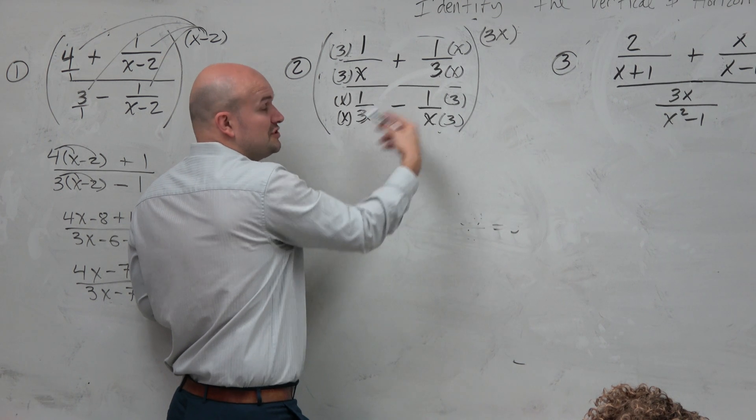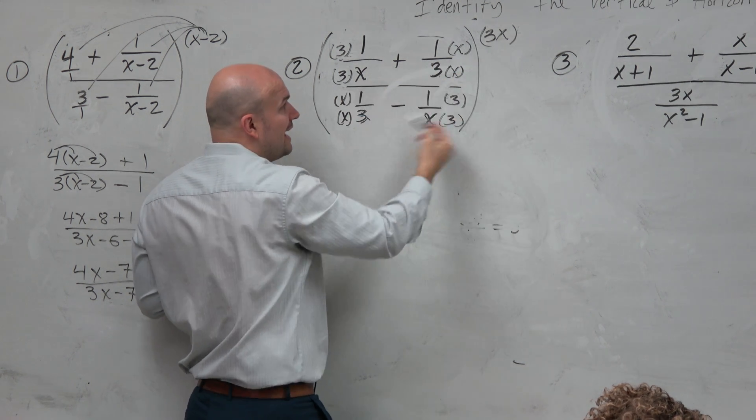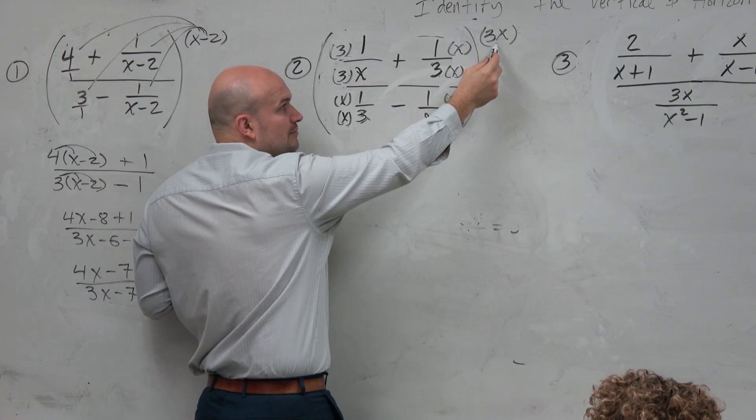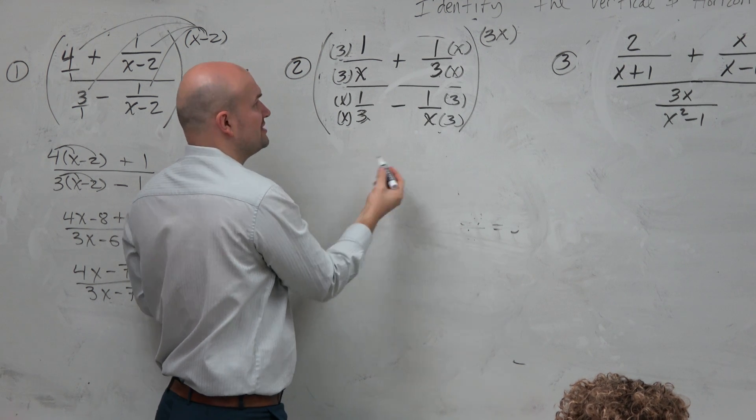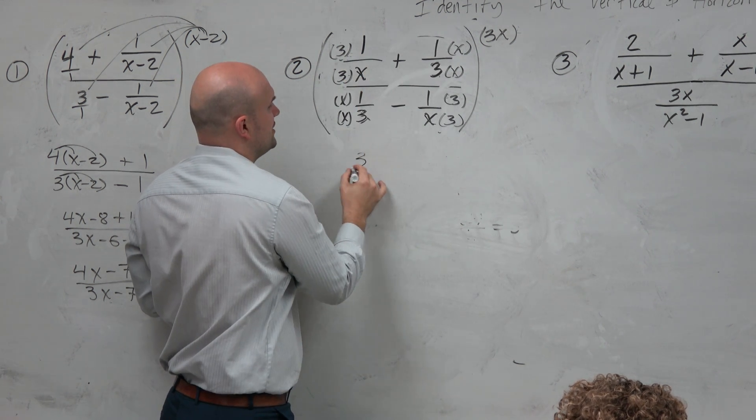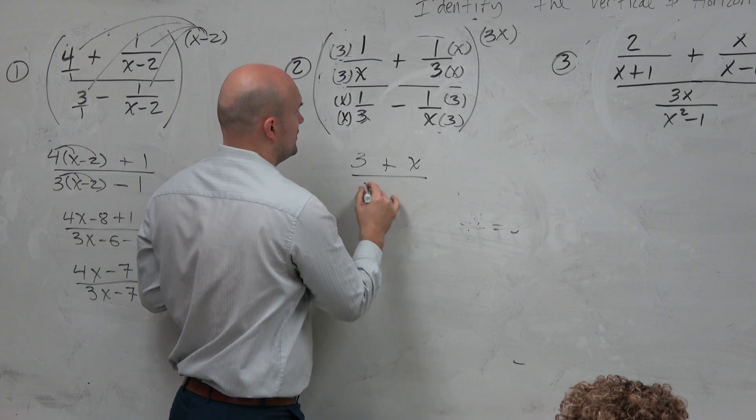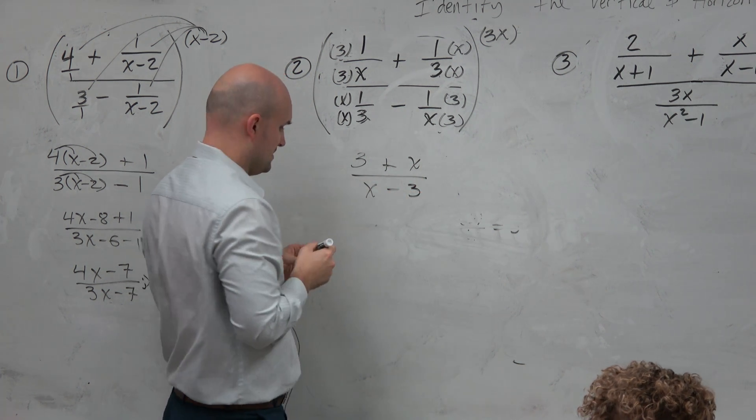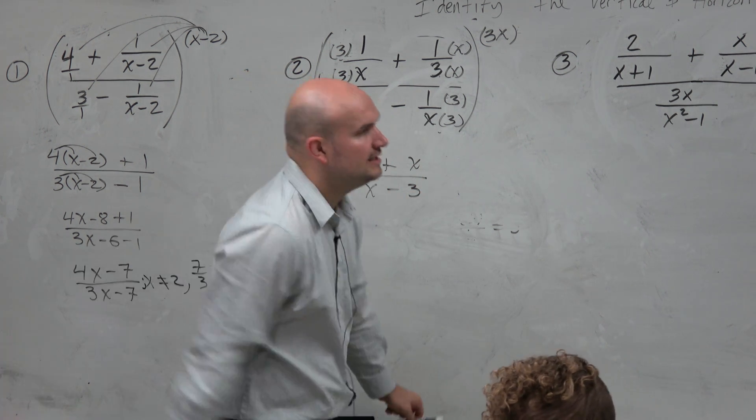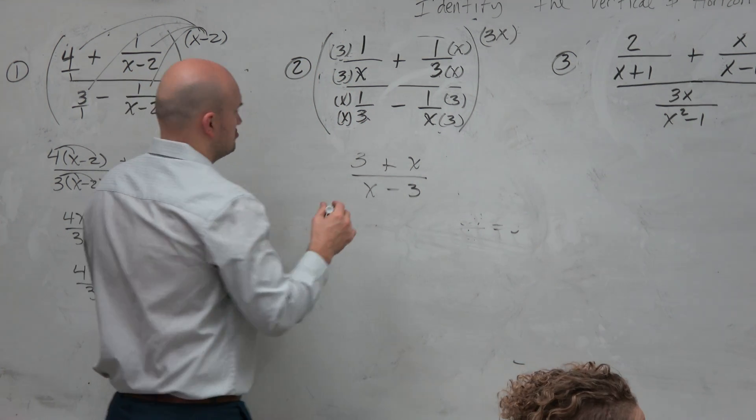So you can get common denominators, just take the numerators, that's fine. But the reason why it works is because really, technically, what you're doing is multiplying by the LCD. Your method is just not really showing that. But either way, you're getting 3 plus x over x minus 3. Rather easy.